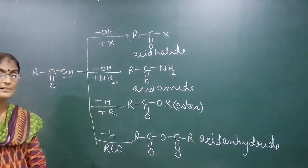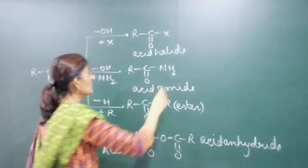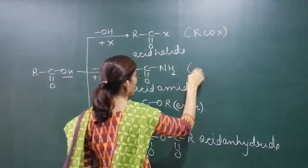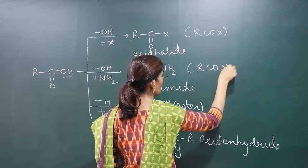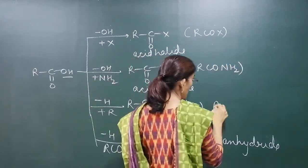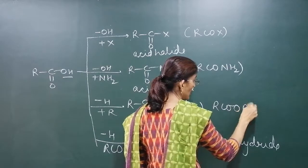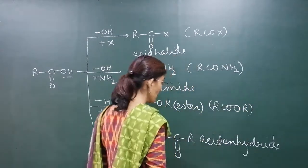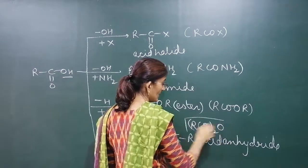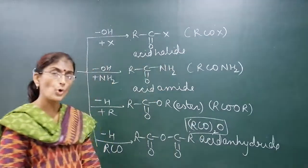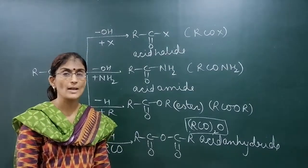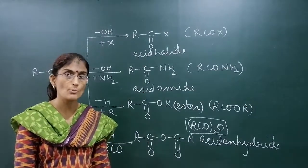So there are four derivatives of carboxylic acids: acid halide (general formula RCOx), acid amide (RCONH₂), ester (RCOR'), and acid anhydride. The general formula for an anhydride is RCO–O–COR. All of them have a carbonyl group — the C=O group — that is why they are known as carbonyl compounds.